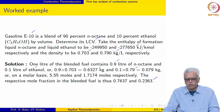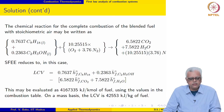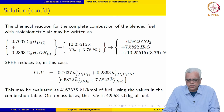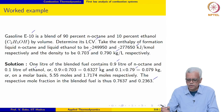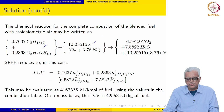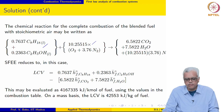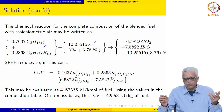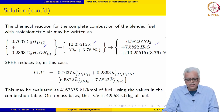The mole fractions work out to be 0.7637 and 0.2363. The chemical reaction for complete combustion of the blended fuel with stoichiometric air may be written using these mole fractions. After balancing the chemical reaction, the number of kilo moles of air required is 10.25515 times 4.76. The products are shown, and SFEE applied to the combustor reduces accordingly.